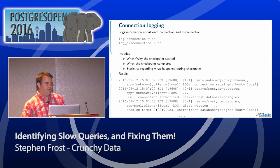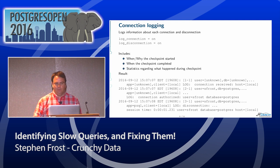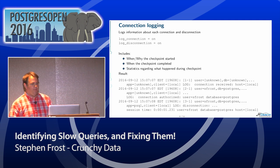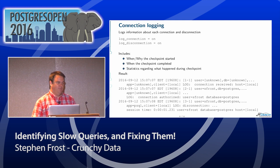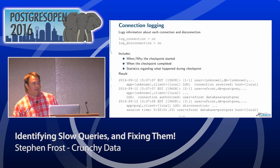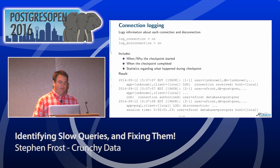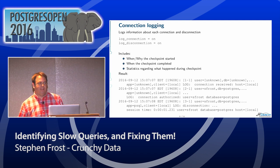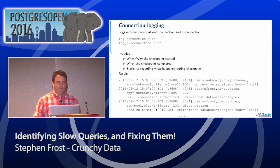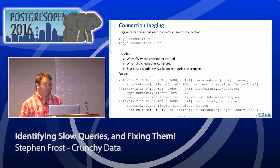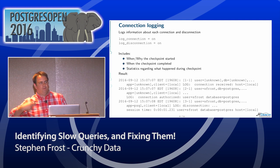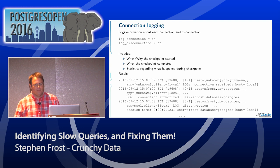This is connection logging — just logging the connections and disconnections. You end up with three log entries: a connection received entry, authentication information when the connection has been authorized, and then a disconnection. This can help you analyze how long connections have been made to the database. In particular, if you have a lot of short-lived connections, that's usually a bad thing, and you want to use a connection pool to improve performance. A lot of people connecting for every query is ridiculously slow and takes a lot of time.